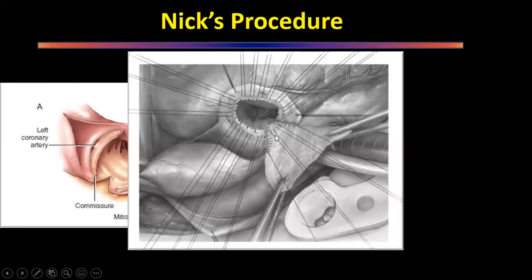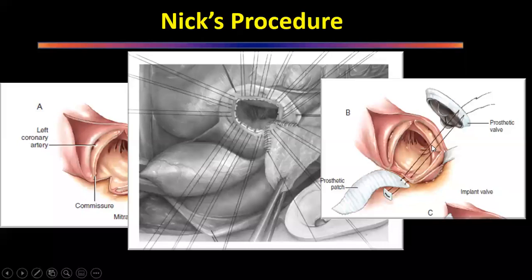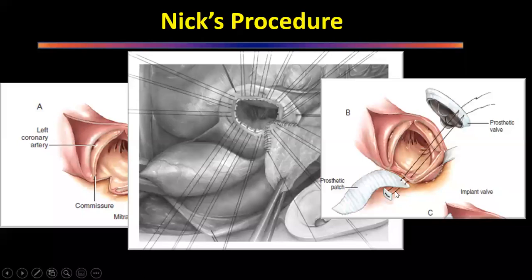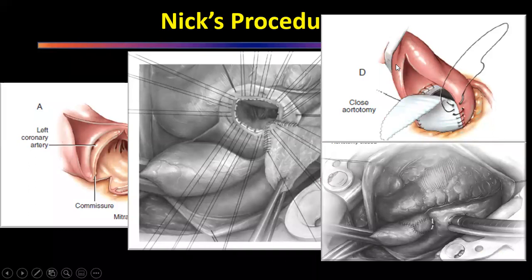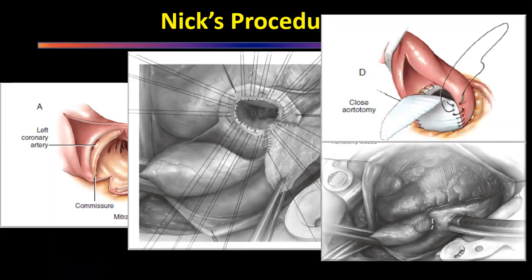The V-shaped defect in the Nicks procedure is filled with either pericardium or a Dacron patch cut in half. This patch is sutured into the defect, the valve is then seated — sutures on the left and right coronary sides taken in regular fashion, but on the patched non-coronary side, pledgeted sutures are placed from outside in. The patch is continued superiorly to close the aortotomy. One to two sizes larger valve can be implanted. This is a commonly asked procedure that MCh-level trainees should be able to perform regularly.